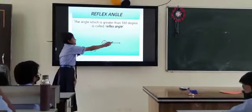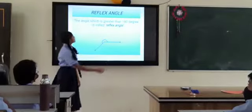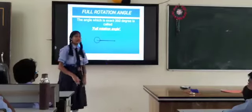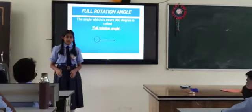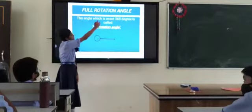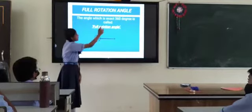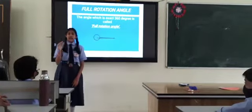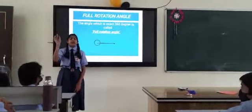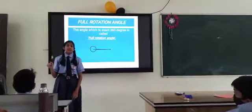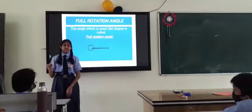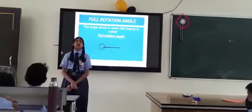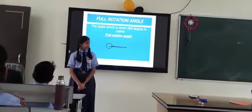Here you can see it is also a reflex angle. Next we will see full rotation angle. The angle which is exactly 360 degrees is called full rotation angle. When the angle is at 0 degrees and when it fully rotates, it comes to 360 degrees. So the 360 degree angle is called full rotation angle. So that is my presentation on angles.